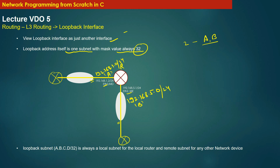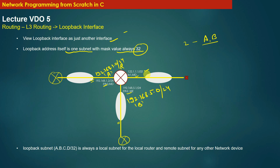Now let us visualize how a loopback interface logically looks in the topology. Adding loopback interface LO1 to router R: loopback interfaces also have MAC addresses and are configured with IP addresses. Any IP address assigned to a loopback interface always has a mask value of /32 — loopback interfaces do not have a mask value other than /32 for IPv4.